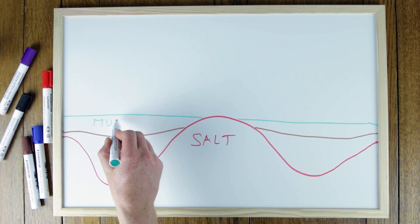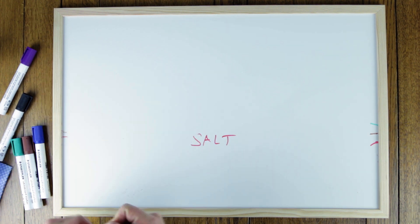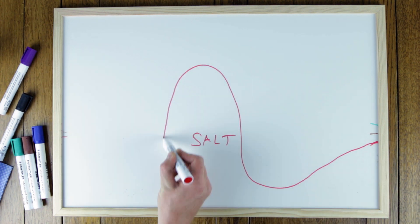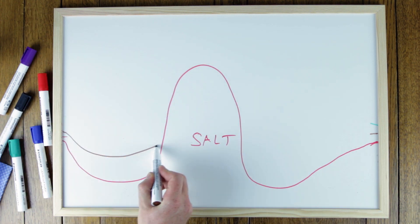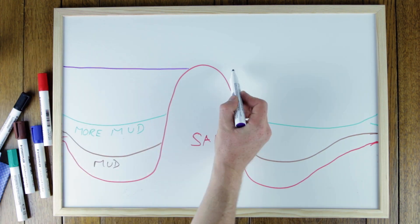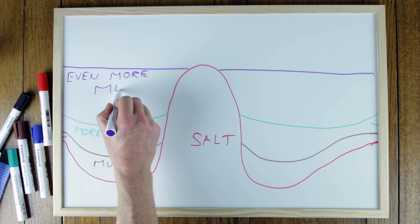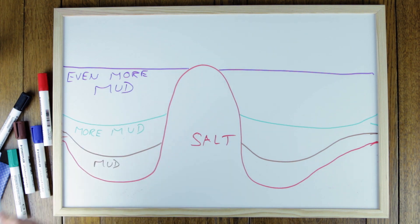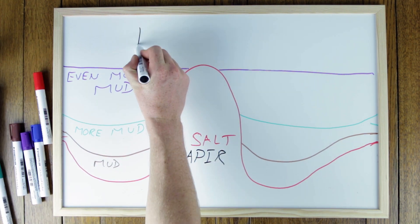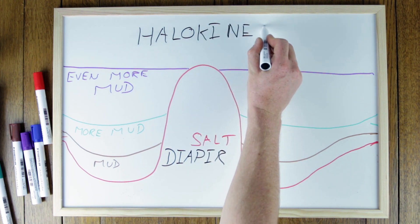I'm studying the ways in which the salt deforms and interacts with the sediments adjacent to it using magnetics. As it is buried, the base of the salt sinks, but the top of the salt remains at the surface, eventually resulting in underground salt structures that can be kilometers deep. These are called diapirs, and the process of salt movement is called halokinesis.